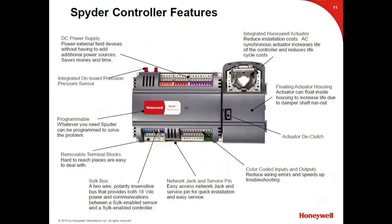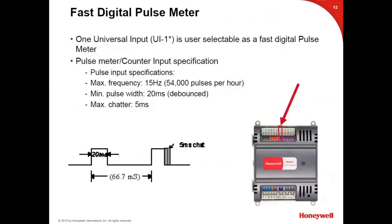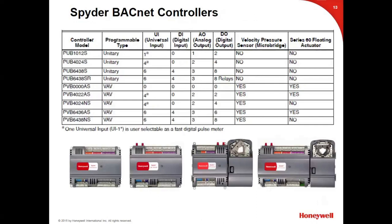Color-coded inputs and outputs reduce wiring mistakes, and the terminal blocks are removable. Each one of our controllers has a universal input that can be used as a pulse to accept pulse counts for meters. This is a chart from our documentation showing our BACnet line — the PUB and the PVB — with I/O counts and controller specifics. The naming convention: the second character is 'U' for unitary, 'V' for VAV; the third character is 'B' for BACnet or 'L' for LON.